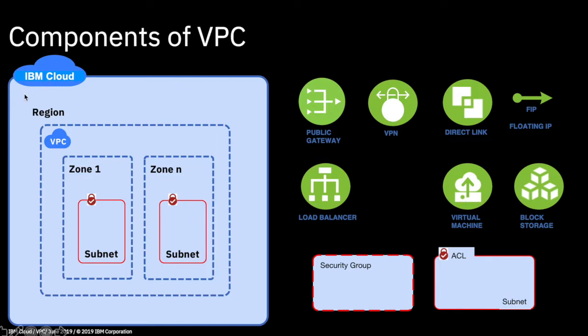The IBM Cloud is broken into regions — a region is basically a geographical area. The places where VPC is currently available are Dallas, Frankfurt, and Hong Kong. Sydney and London are coming online very soon, and other regions will be rolled out over the next few months. Within a region, you have zones, which are effectively the data centres in those regions. In Dallas, for example, you might see zone 1, zone 2, and zone 3 — those are effectively separate data centres.